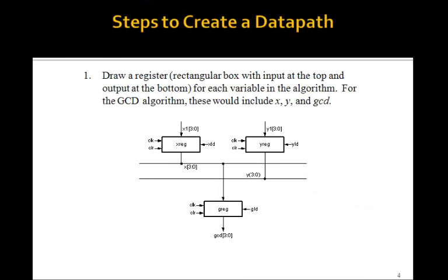So here are the steps to create a data path. The first thing to do is to draw a rectangle for each of the inputs and outputs of your algorithm. So for our GCD algorithm, we need an input for a register for the inputs x and y and for the output GCD. So we have three registers called x register, the output will be x, y register, the output will be y, and the g register, the output will be the GCD.